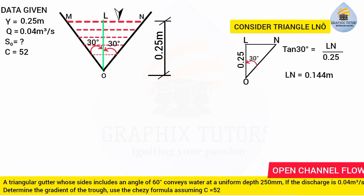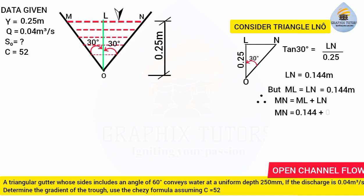From the symmetrical triangular channel, ML equals LN. So since LN is 0.144 meters, ML is also 0.144 meters. Therefore, the total top width MN = ML + LN = 0.144 + 0.144 = 0.288 meters.